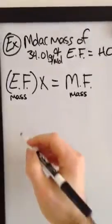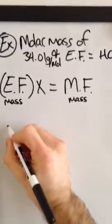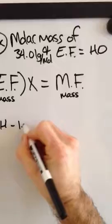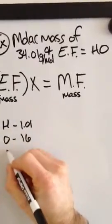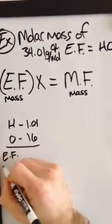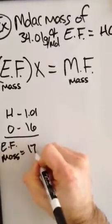So in this example I am given the empirical formula of HO. Now I know that H has a molar mass of 1.01, oxygen has a mass of 16, so the empirical formula mass is going to be equivalent to 17.01.